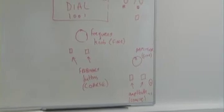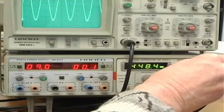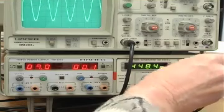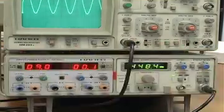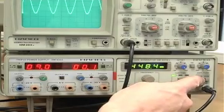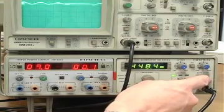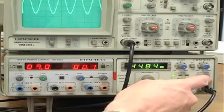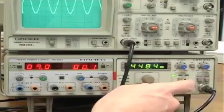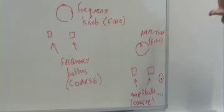And to set the amplitude, you have amplitude controls in this side of the generator. There's a rotary fine knob. And again, there's two buttons for coarse control. In fact, these buttons make very large steps in the magnitude.